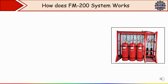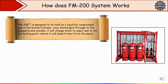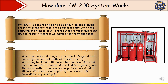Now we'll see how the FM-200 system works. FM-200 is designed to be held as a liquefied compressed gas in a cylinder. Once discharged through the pipework and nozzles, it changes state to vapor due to its low boiling point, absorbing heat from the space. Since a fire requires three things — fuel, oxygen, and heat — removing heat restricts it from continuing. According to NFPA 2001, once a fire is detected and FM-200 is released, it should discharge fully into the space within a maximum permitted time of 10 seconds, including putting the fire out.